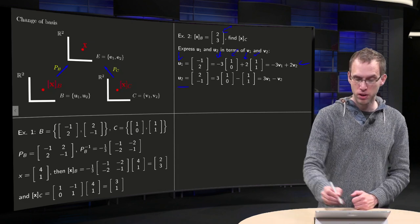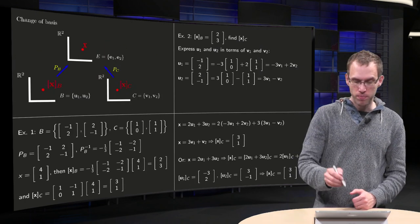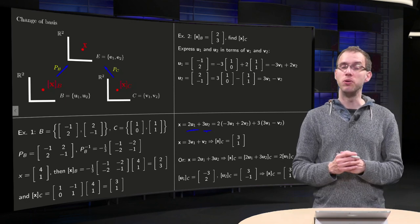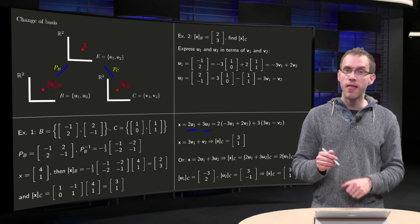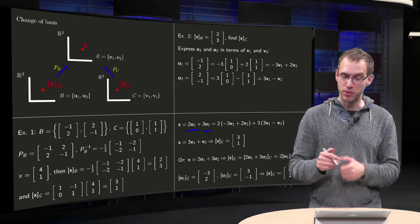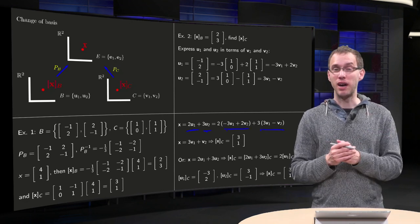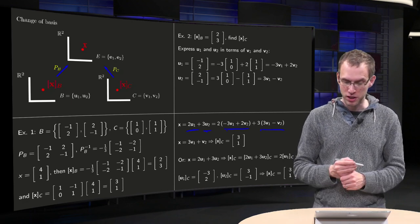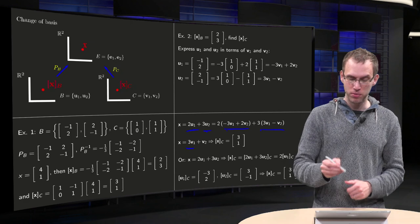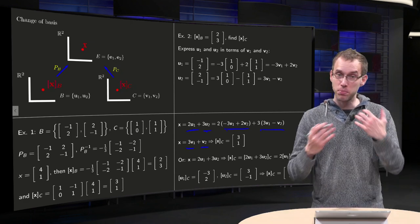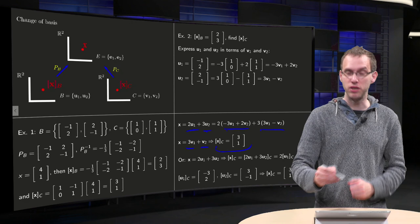Similarly, u2 equals 3 times v1 minus v2. Now, since x_b equals (2, 3), we know x equals 2 times u1 plus 3 times u2. We now substitute the expressions for u1 and u2 in terms of v1 and v2. This gives x equals minus 6 times v1 plus 9 times v1, which is 3 times v1, plus 4 times v2 minus 3 times v2, which is plus v2. So x equals 3 times v1 plus v2, and we can read off x_c equals (3, 1).